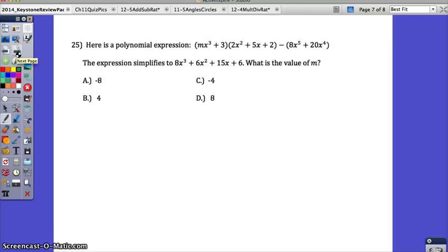Number 25. Now this is a tough problem. You may not have gotten this one the first time you tried to do it. Chances are there might only be one of these problems in the test. You might not see anything like this at all. We wanted to show you. So here's a polynomial expression, and the expression simplifies to 8x cubed plus 6x squared plus 15x plus 6. What is the value of m? What number should be here? So that when I multiply this and then I subtract, I get this.